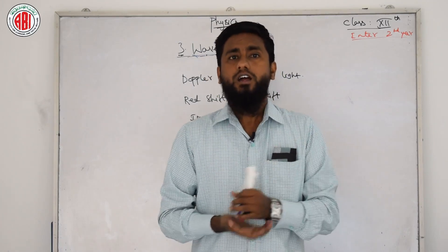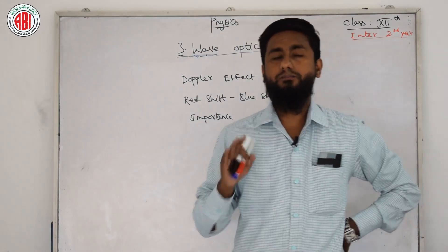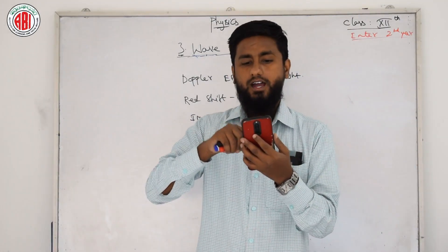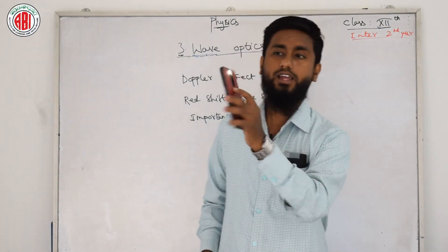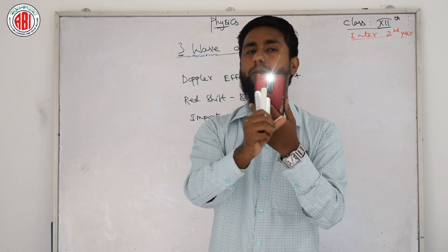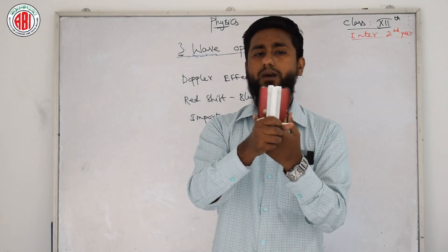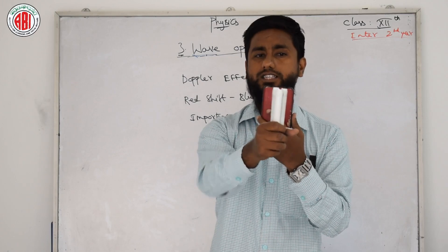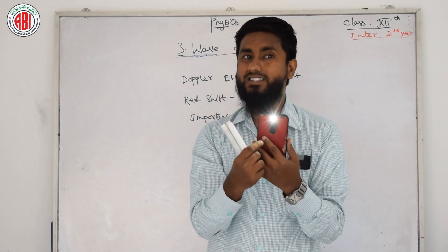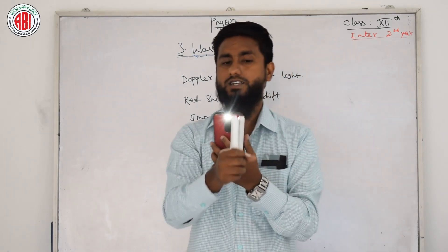What does it mean? If the source and observer are both in motion — this is my mobile phone and I am switching on my flashlight. This is the marker. The source of light is my mobile's flashlight and the observer is the marker. If the marker is moving away from this point to that point, there is a change in the frequency of light. This is nothing but the Doppler effect of light.